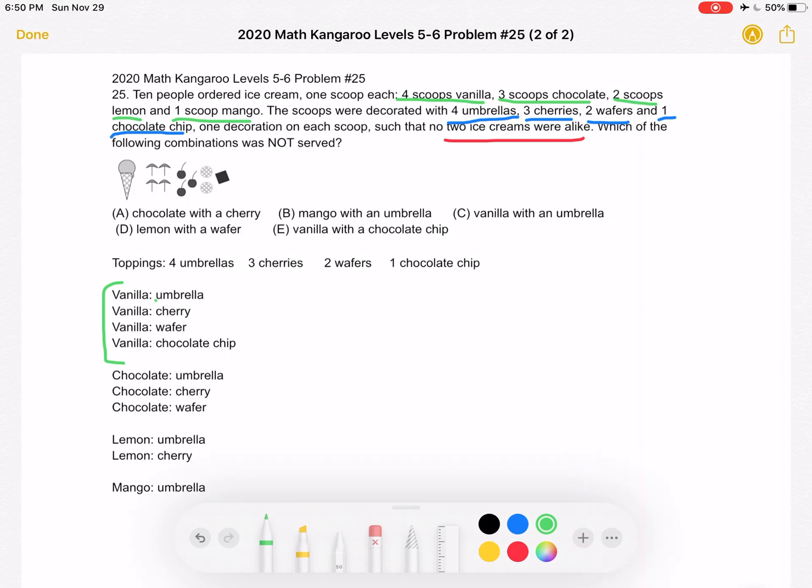we can use an umbrella, cherry, wafer, and chocolate chip, right? Because we have four scoops and we need to have four different toppings.